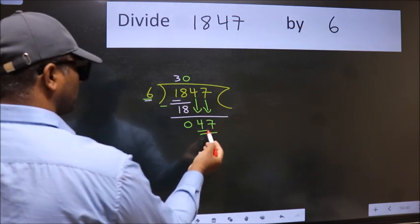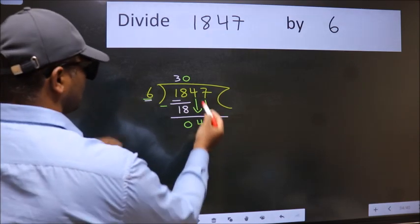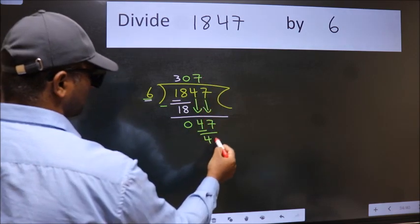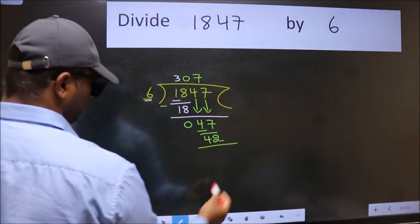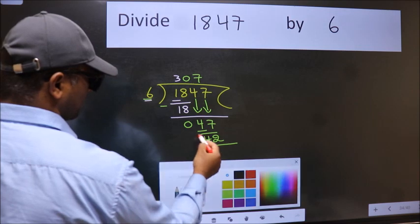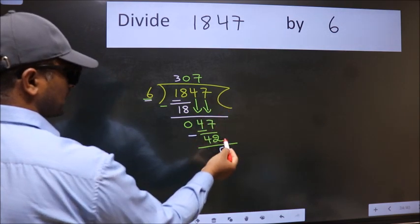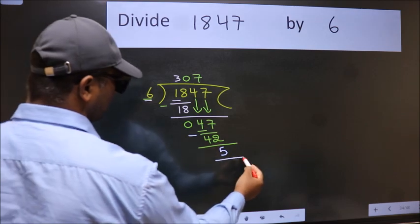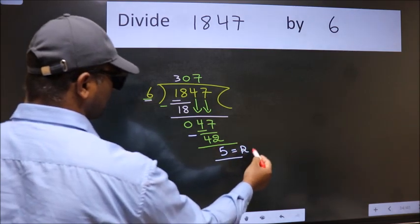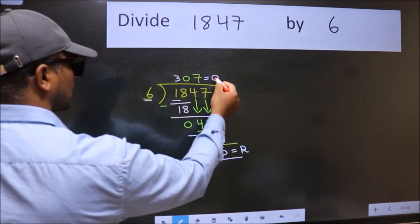A number close to 47 in 6 table is 6 sevens 42. Now we subtract. We get 5. No more numbers to bring it down, so we stop here. This is our remainder and this is our quotient.